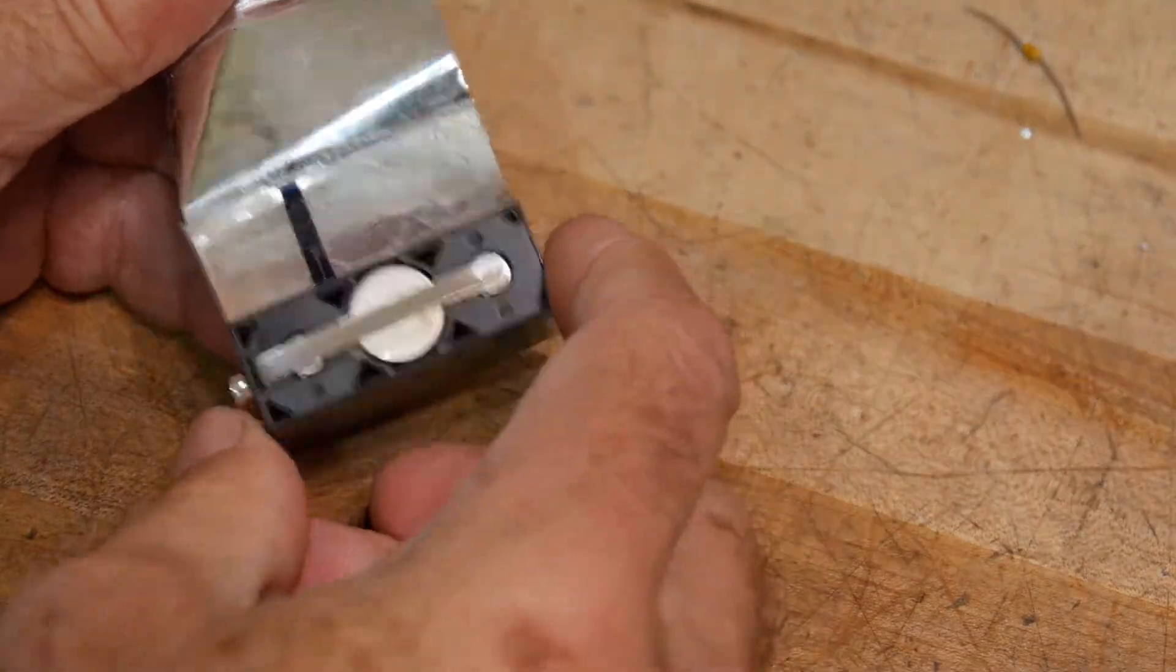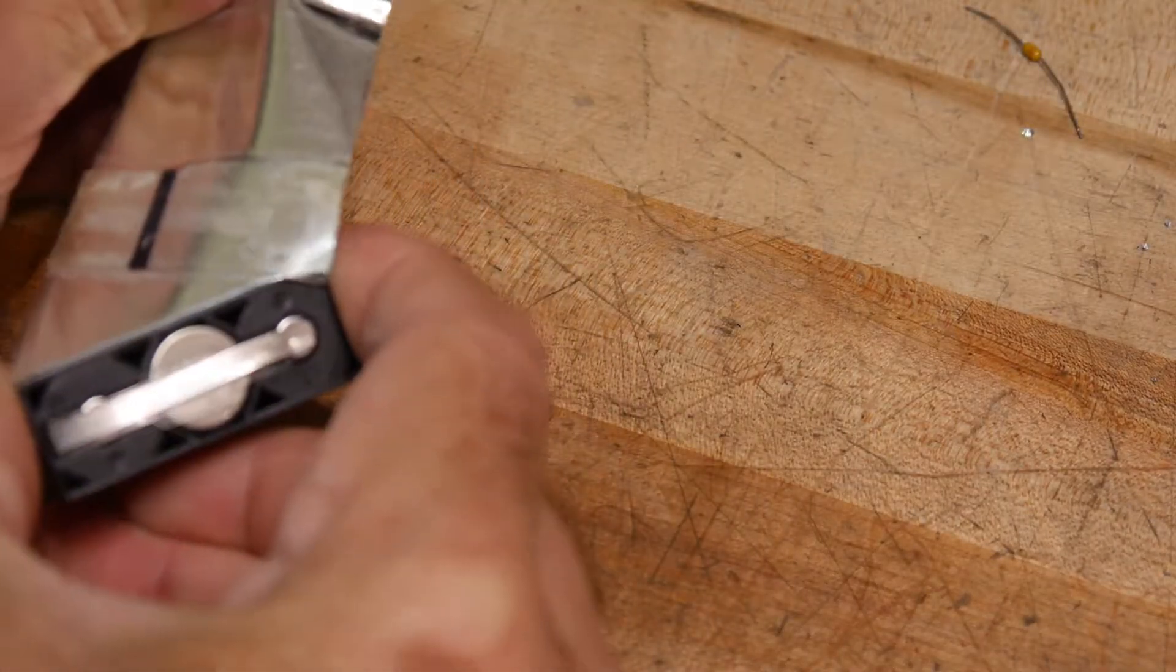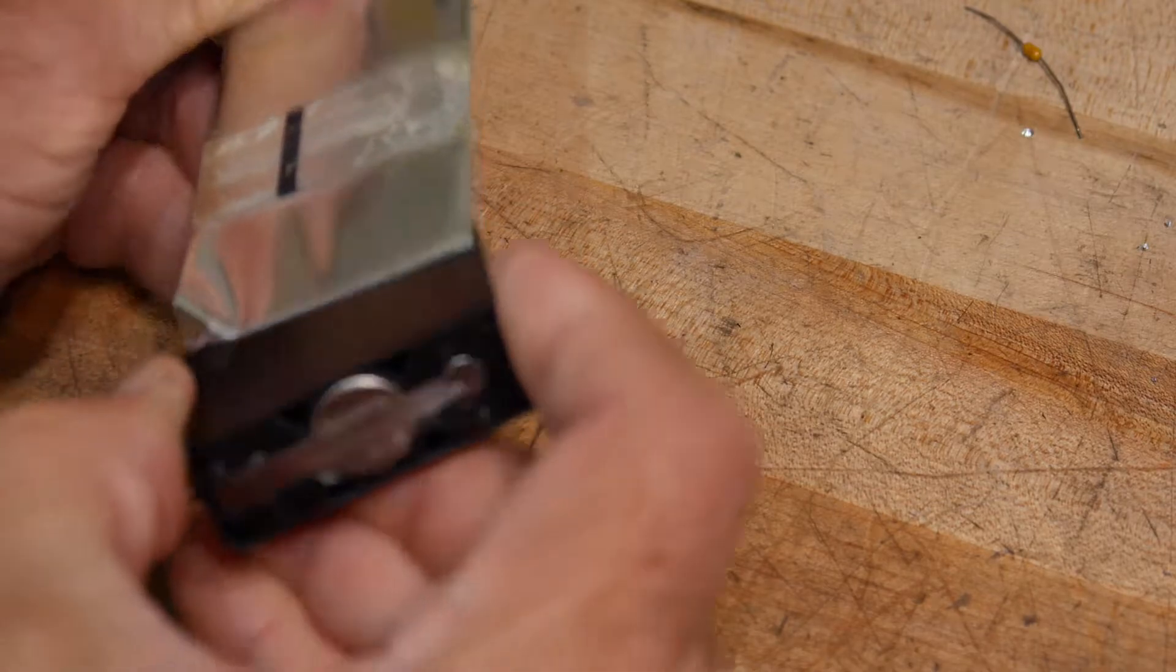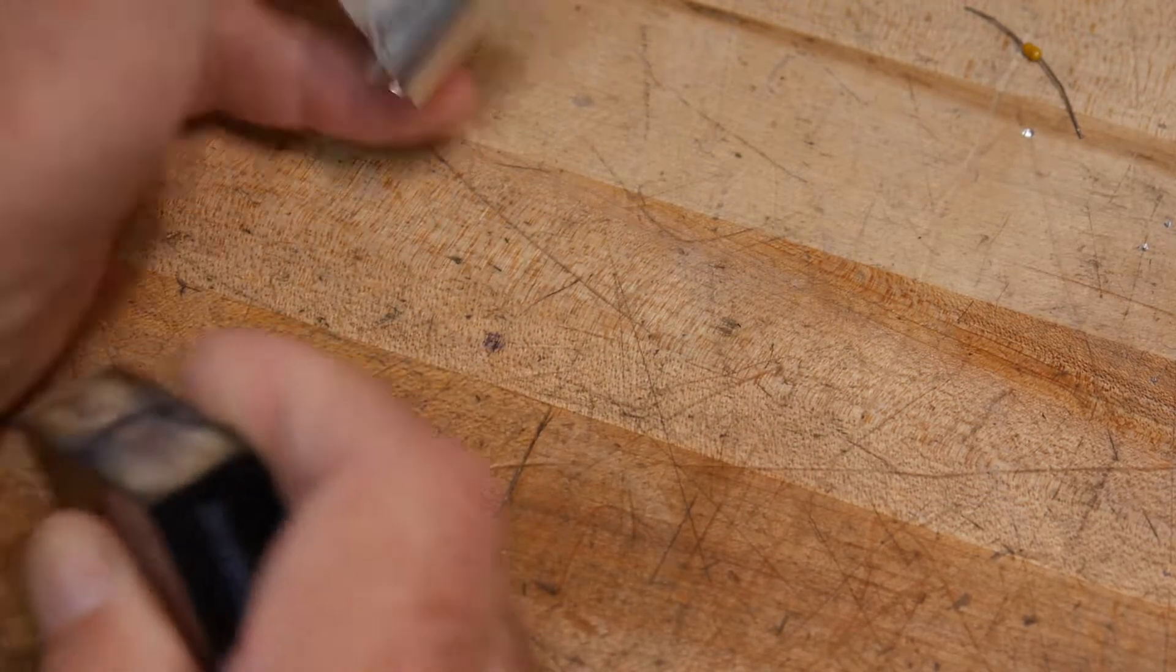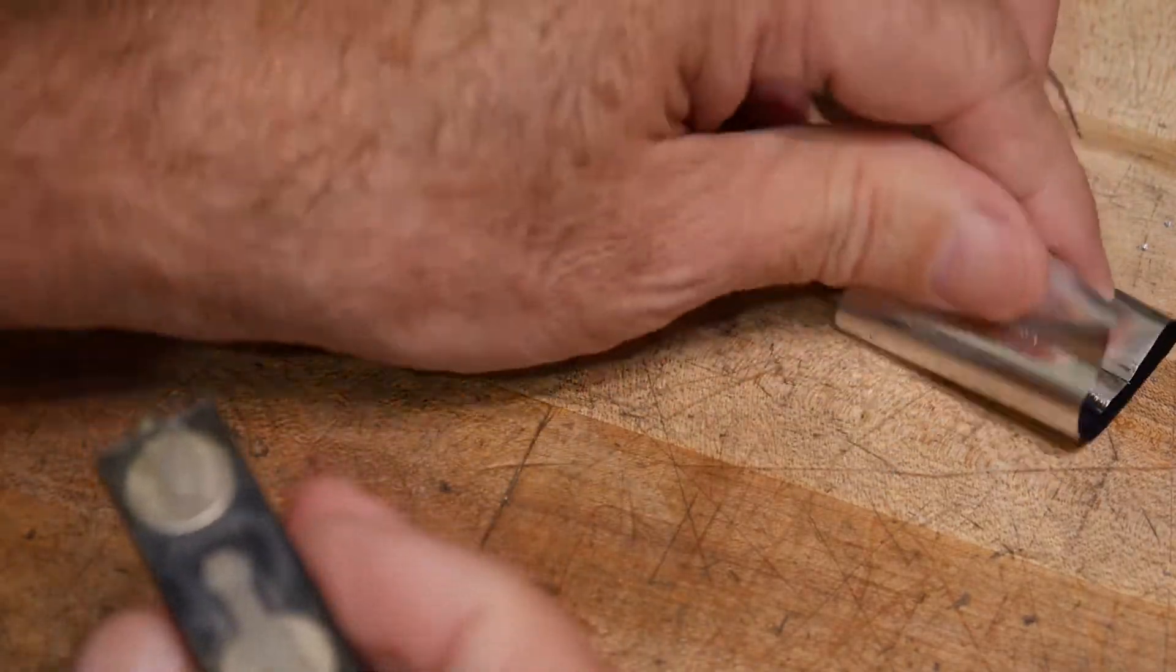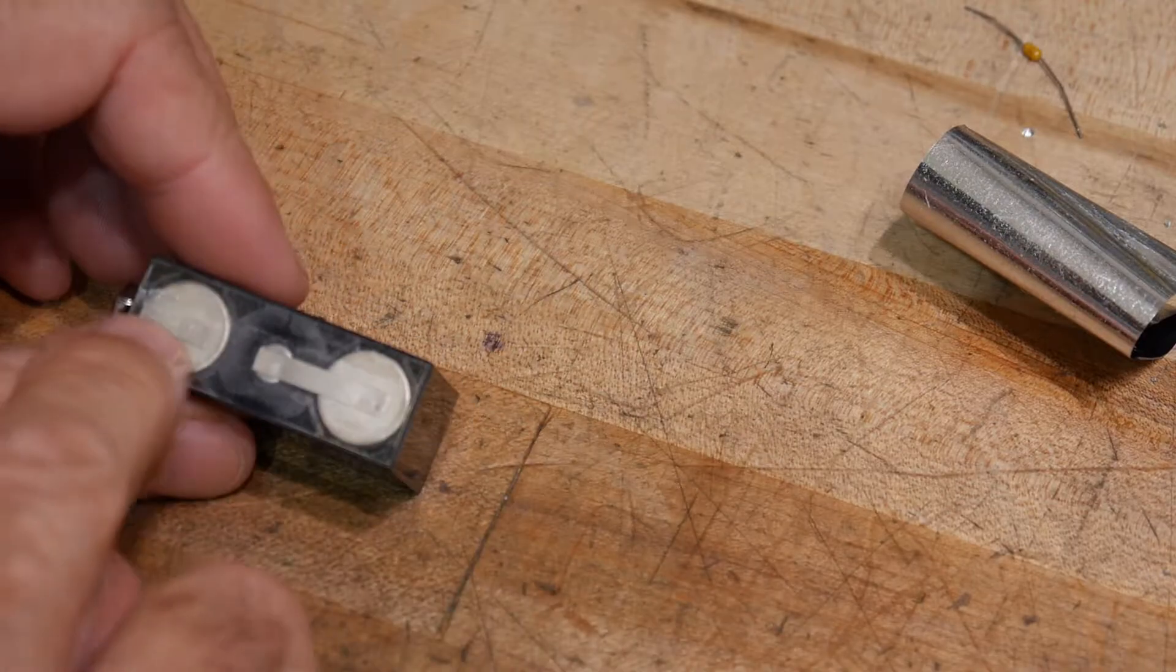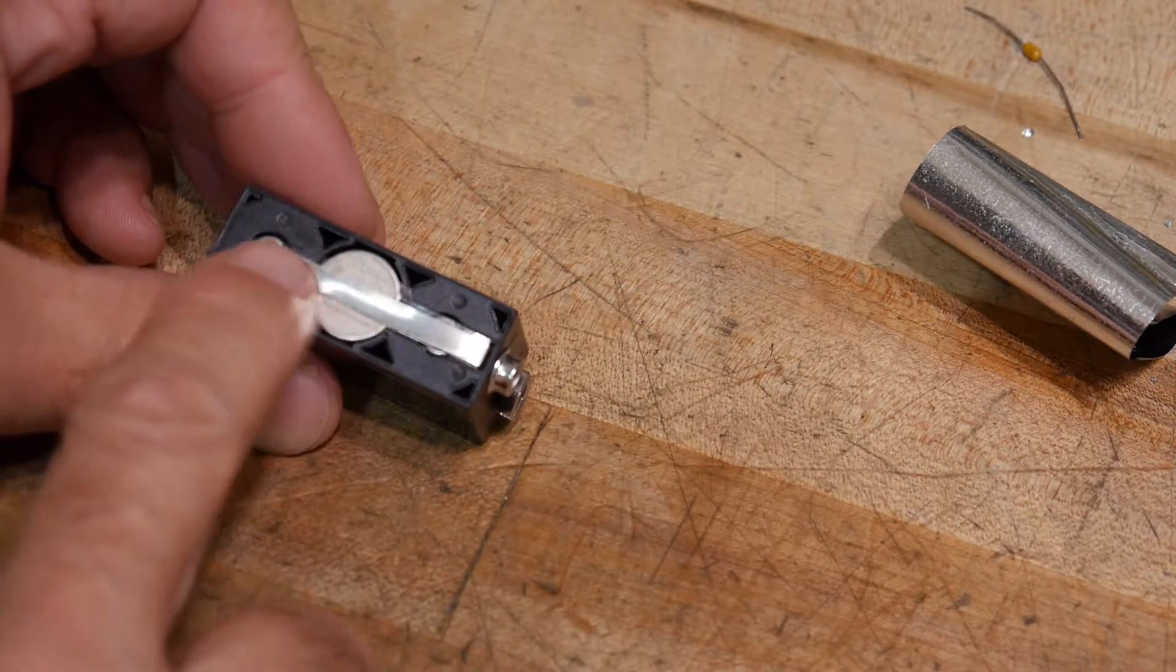So a normal lithium battery is 3 volts, so I guess that makes sense. 3 plus 3 plus 3 gets your 9. And there's some strapping that's spot welded on there, the negative goes to that cell.